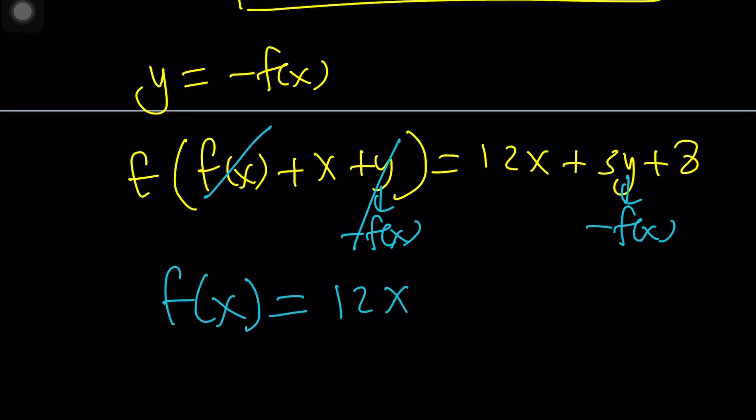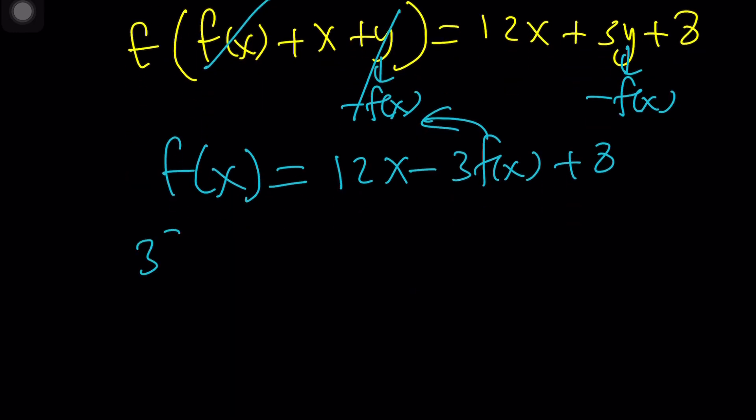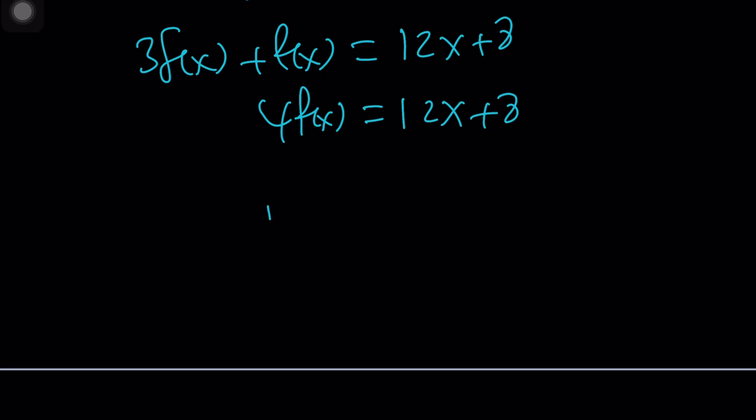On the right-hand side, we're going to get 12x minus 3 times f of x plus 8. Put the 3 f of x on the left-hand side. 3 f of x. And then we have the plus f of x equals 12x plus 8. This gives us 4 times f of x equals 12x plus 8. Divide both sides by 4. You'll get f of x equals 3x plus 2 as before.